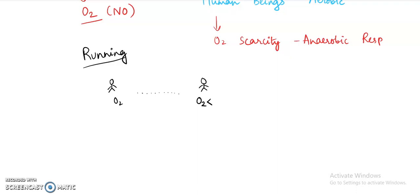So when you are running continuously and you are not in a habit of running that much, at that time your body will face oxygen scarcity. When oxygen scarcity is there, anaerobic respiration will occur in your muscles, because of which the pyruvate that is formed in the cytoplasm of the cell, or pyruvic acid that is formed in the cell.